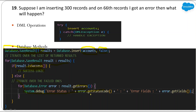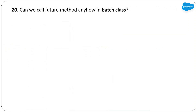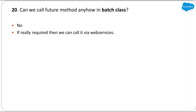In summary, it depends on the approach used to save records. Next question: can we call a future method in batch classes? The straightforward answer is no — we can't call any future method in batch classes directly. However, if you really need to call it, you can do so via web services: create a web service that calls the future method, and then call that web service from your batch class. There is no direct way to call future methods in batch classes, but web services can be used as a workaround.